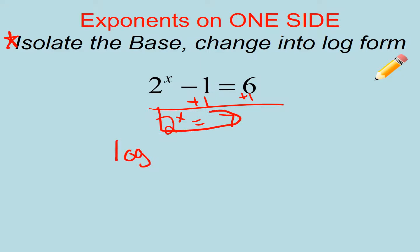So change it. Remember, you can also think about it as the L. So log base 2 of 7 is equal to x. So then you're going to punch in your calculator log 7 divided by log 2. And that's going to get you a decimal of 2.807. So that's your answer.